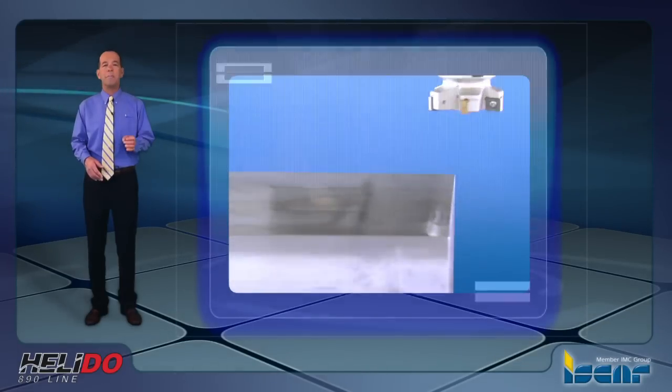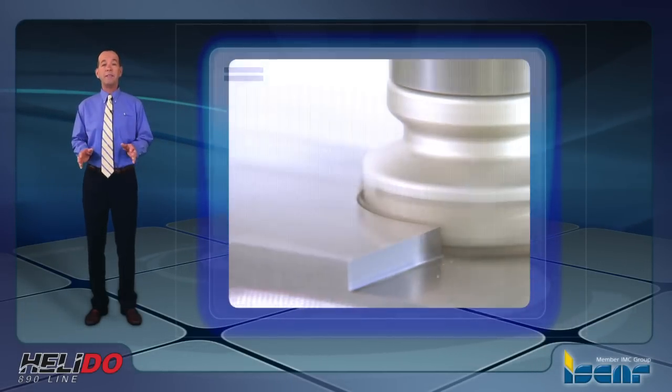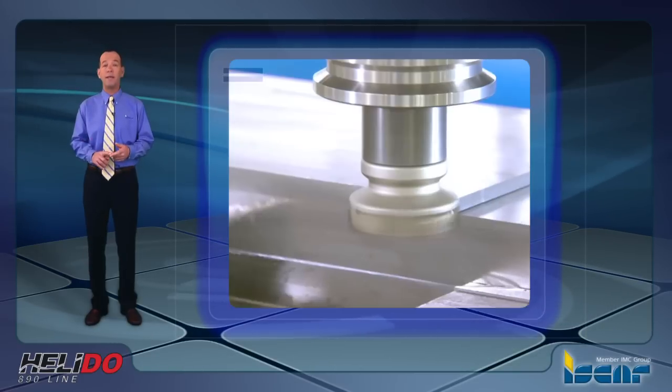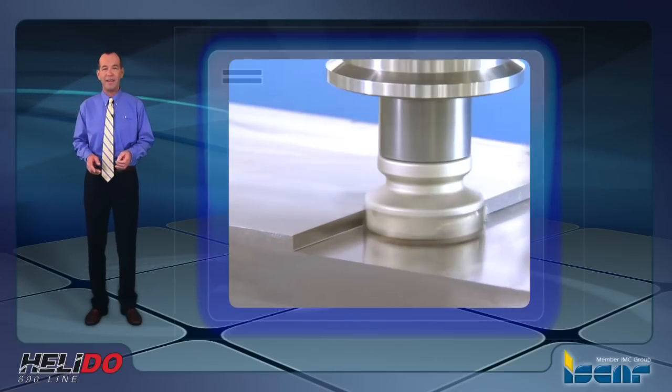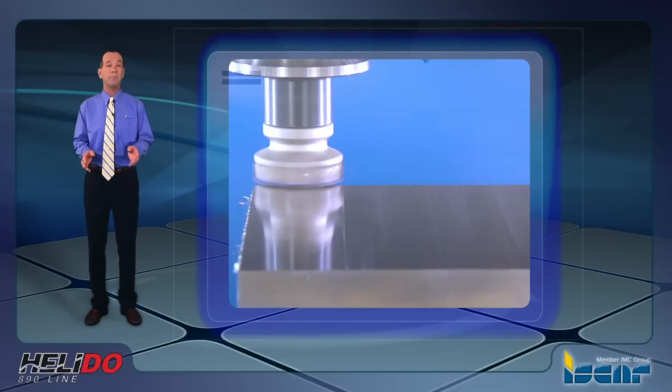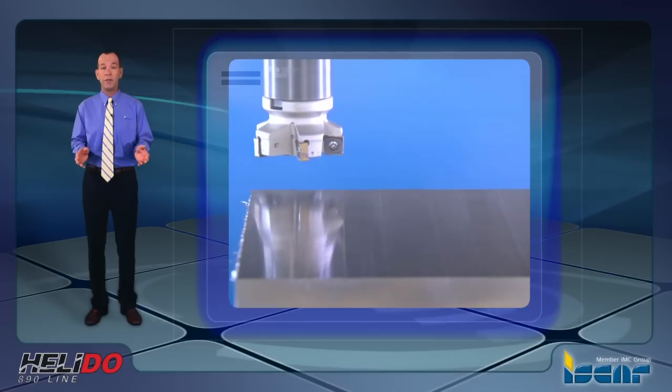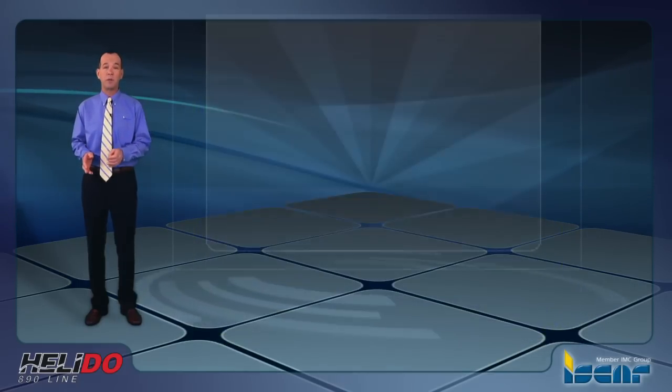In addition, machining next to constrained or restricted areas where the tool movement is limited can be easily overcome by using Helidoo S890 with its sophisticated cutting edge geometry. This tool can travel and cut freely next to shoulders that might come in contact with jigs, fixtures, or any other type of obstructions.